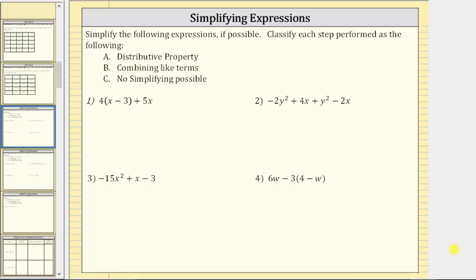We are asked to simplify the following expressions, if possible. Classify each step performed as the following: A, distributive property. B, combining like terms. C, no simplifying possible.